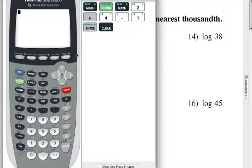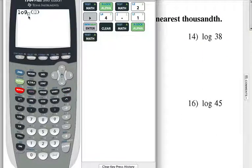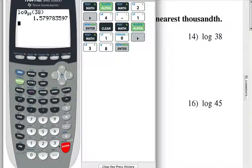So, log base 10 of 38. Let's get to the log base function. So, we put a 10 right there, and we want to put a 38 in our value area. So, 38 and enter. To three decimal places, 1.580.